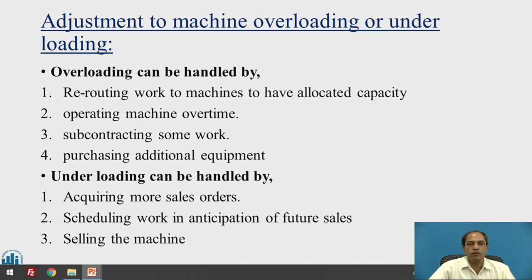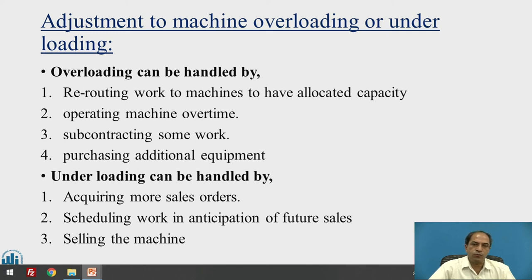The second alternative for overloading is operating machines with overtime. This assumes you are not already running all machines for 24 hours — if you are using one or two shifts, you can use an additional shift, either a second or third shift, and adjust overloading with the help of that additional machine time.